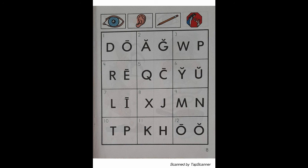Look at the letter in box 10. Listen as I say the sound of the letter. T. With your pencil, circle the letter that reads T.